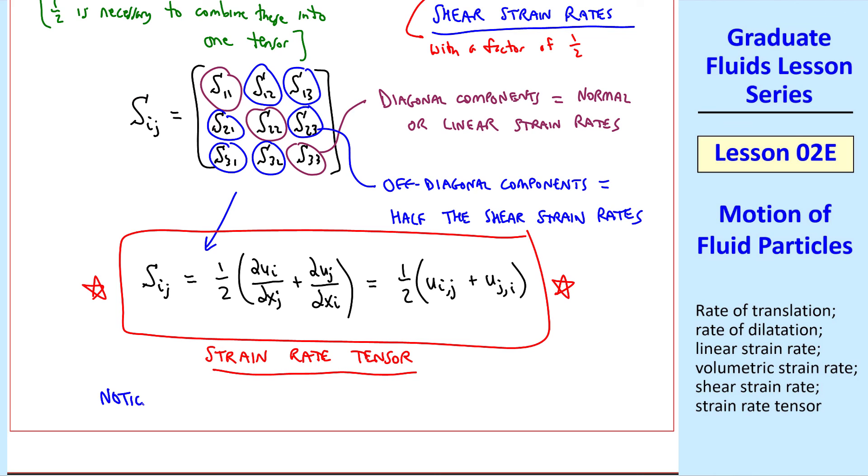And finally, as I've already said, this tensor is symmetric, meaning that this value must be the same as this value, this one the same as this one, and this one the same as this one.